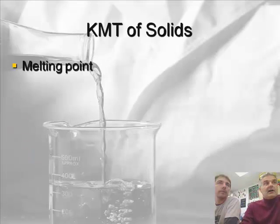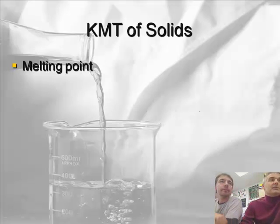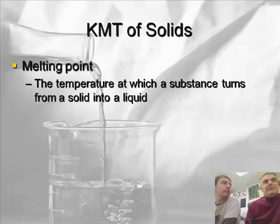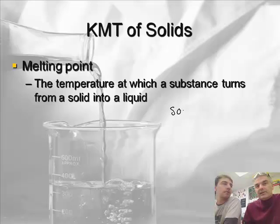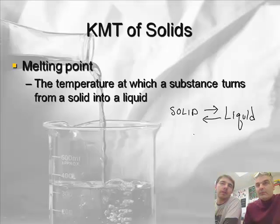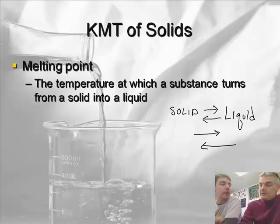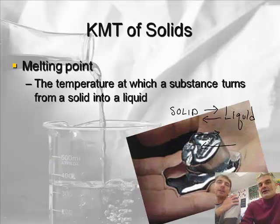Let's talk about solids and change gears a little bit. Melting point — what's melting point? So we're talking about melting points. If I have a piece of ice and put it in my hand, it melts. That's the temperature at which a substance goes from solid to liquid. We can draw it like this: solid with a double arrow to liquid. When you go in one direction it melts, and in the other direction it freezes. The melting point and the freezing point of a substance are the same temperature.